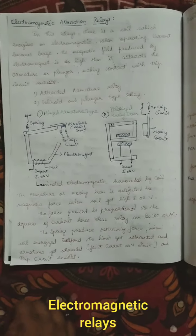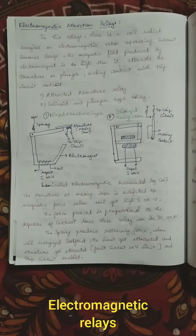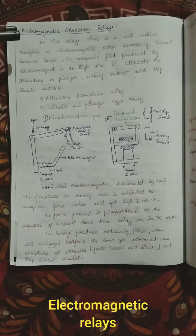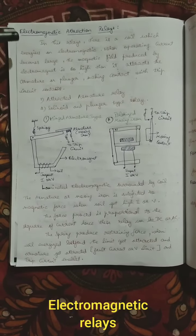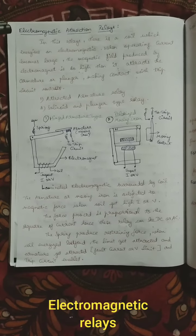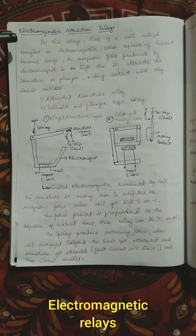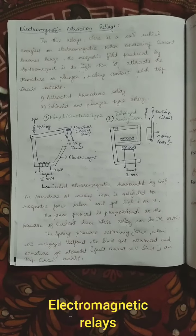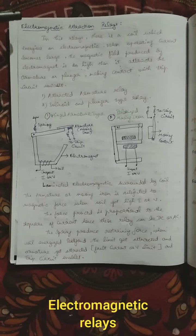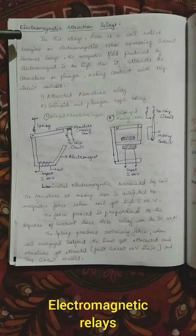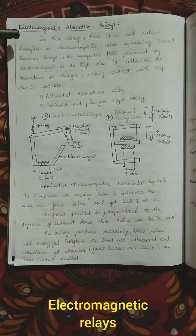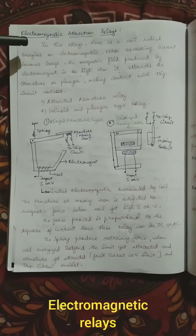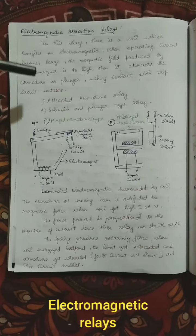There are various types of electromagnetic relays — electromagnetic attraction type and electromagnetic induction type. Right now we are going to see about the electromagnetic attraction type. In this there is a coil.